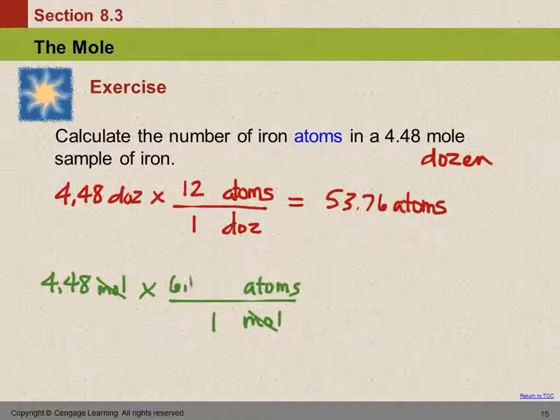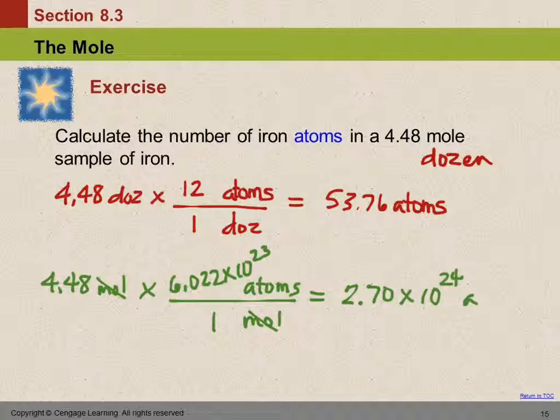How many atoms in one mole? Well, it's a crazy number. 6.022 times 10 to the 23rd. Now, you're pretty much going to have to use scientific notation on your calculator now. That's why I tried to hammer you with it in Chapter 2. 4.48 times 6.022 EE 23 equals... I'm going to round this off to three significant figures, which will give me 2.70 times 10 to the 24th atoms.